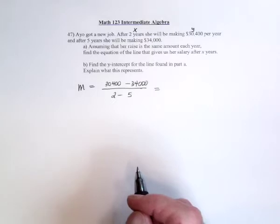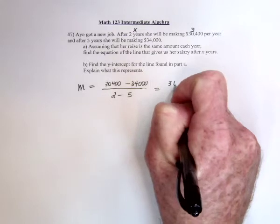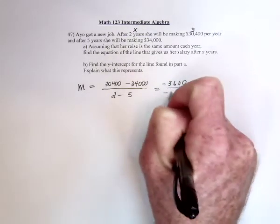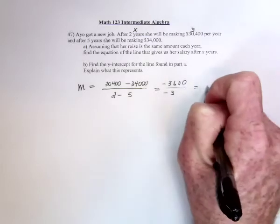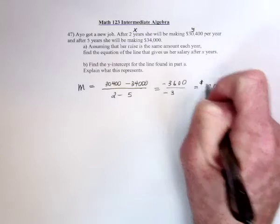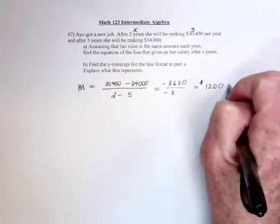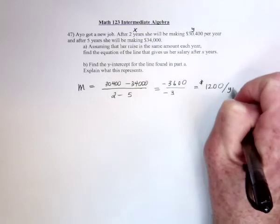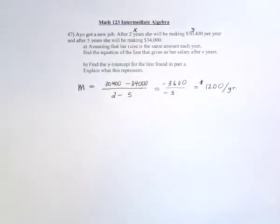So that's going to be negative 3600 over negative 3, or 1200 dollars is going to be the slope. So this is actually, if you label it, it's dollars for the top part and 2 minus 5 is years. So that's her raise. $1,200 per year. $100 a month raise.